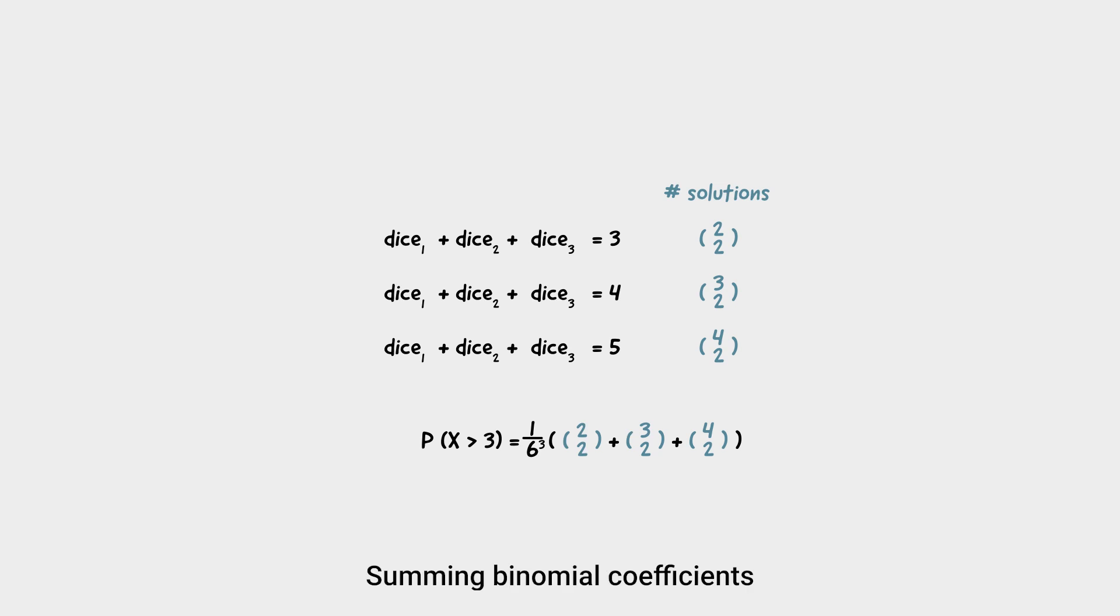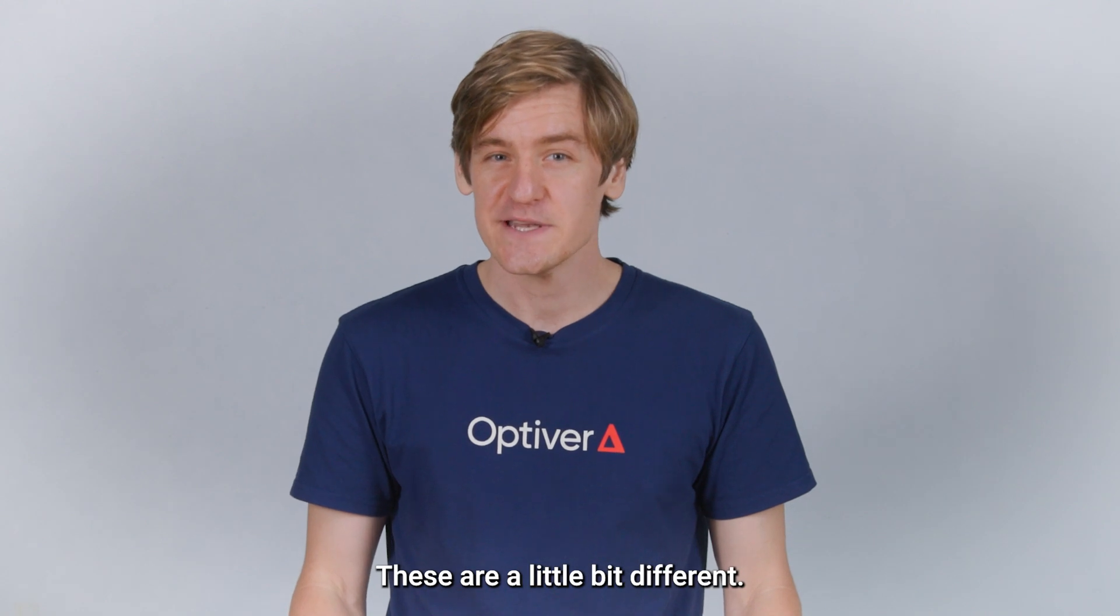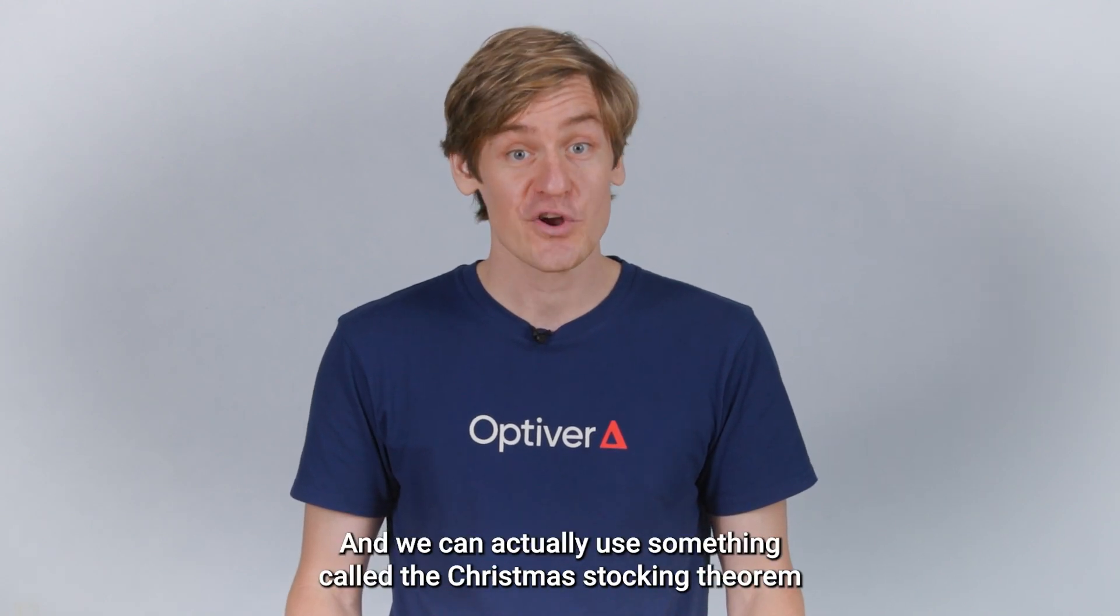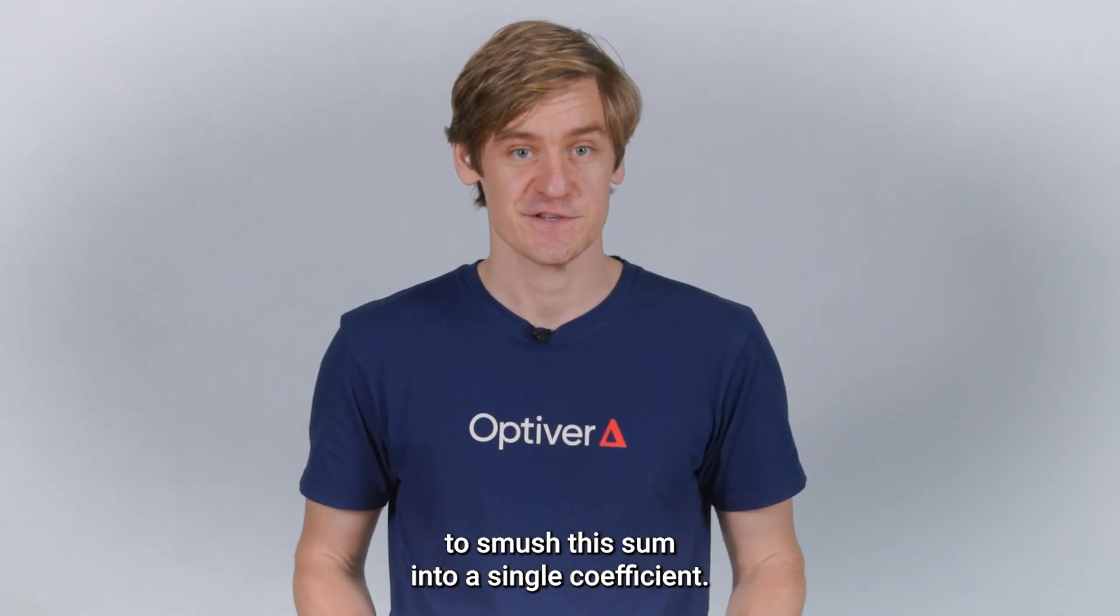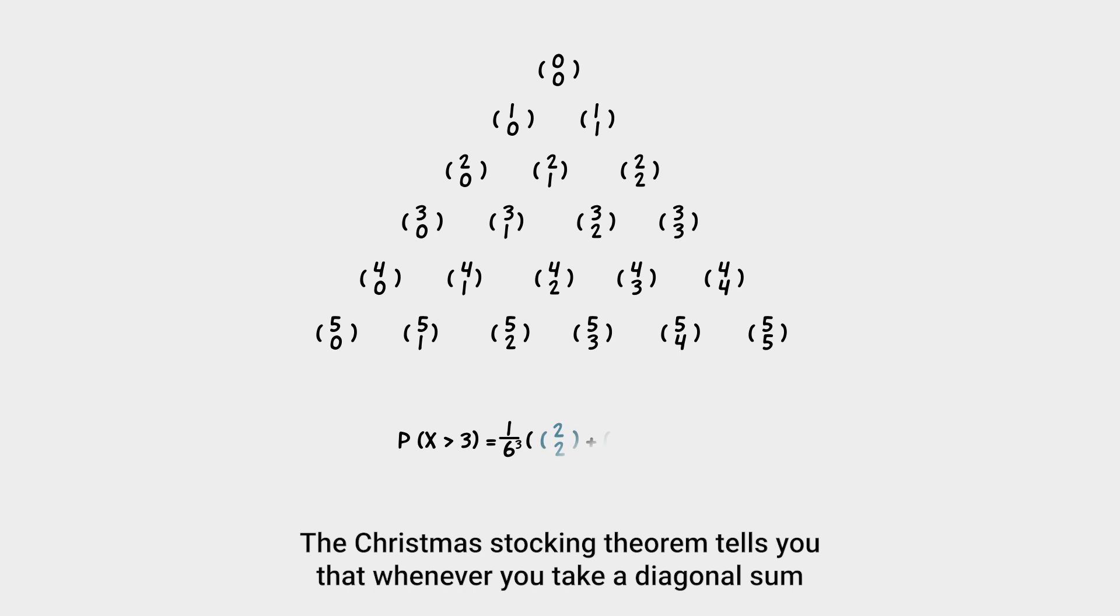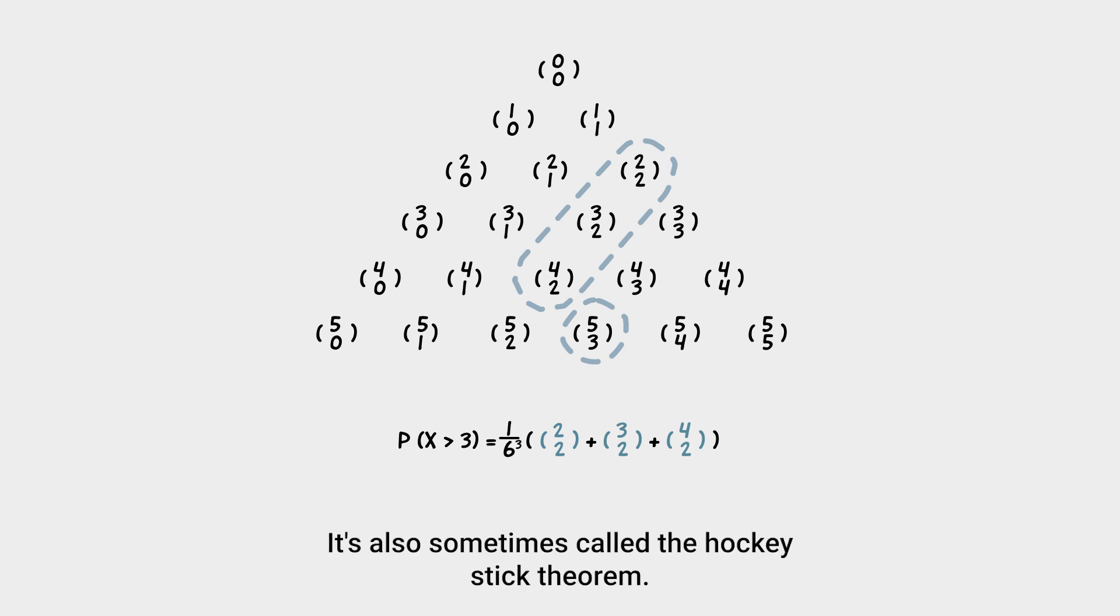Summing binomial coefficients, it feels like we're back in video one. We are not. These are a little bit different, and we can actually use something called the Christmas Stocking Theorem to smoosh this sum into a single coefficient. The Christmas Stocking Theorem tells you that whenever you take a diagonal sum of numbers in Pascal's triangle, starting from a top edge of the triangle, you can find the answer to the sum by completing the Christmas Stocking. It's also sometimes called the Hockey Stick Theorem. Thus, for our sum, we can simply rewrite it as five choose three.